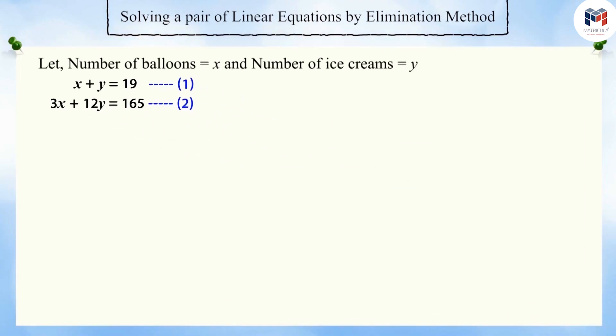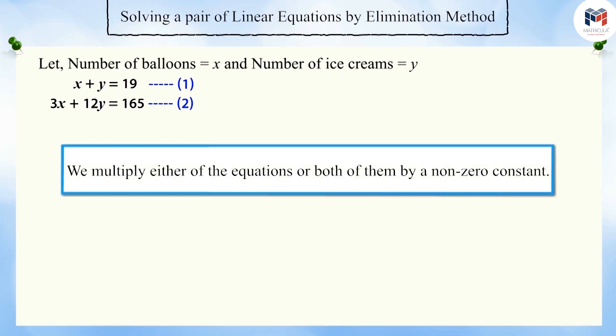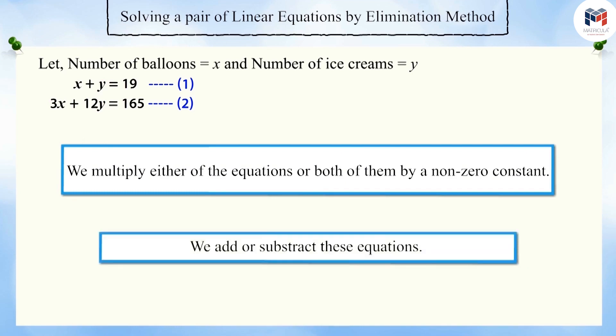First of all, let's make the coefficient value of any one of the variables, x or y, same in both the equations. For doing so, we multiply either of the equations or both of them by a non-zero constant and add or subtract them.